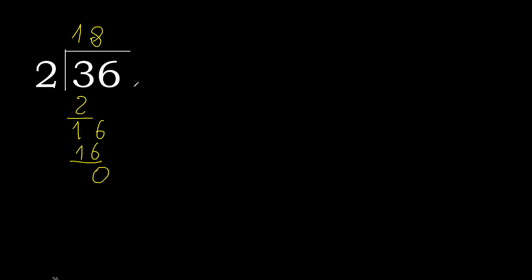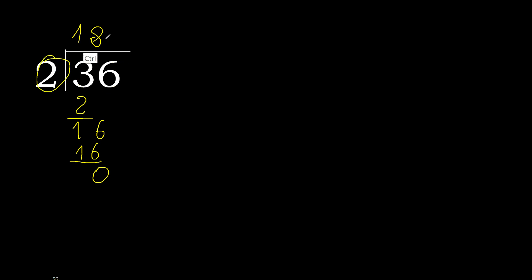0 — and here that is not a number, therefore finish it. 36 divided by 2 is 18.